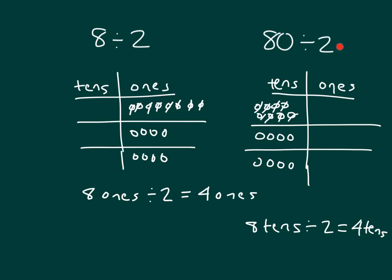Our divisors were the same, and this was 8 ones, and this was 8 tens. Look what happens with those answers. We still have those numbers 8, 8, 2, 2, 4, 4, except what those numbers are worth because of their place value changes.